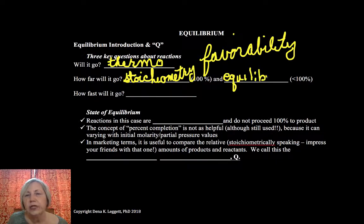An equilibrium is a reversible reaction. Reactions under equilibrium are reversible and do not proceed 100% to make products. And we'll spend significant time talking about that.